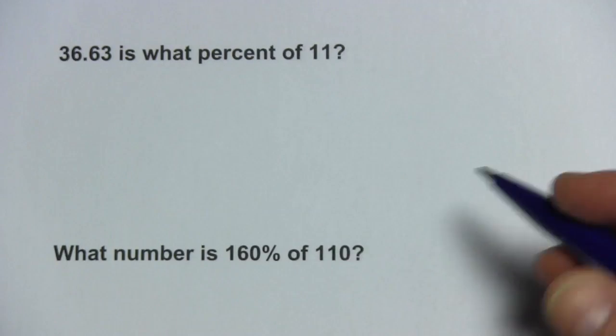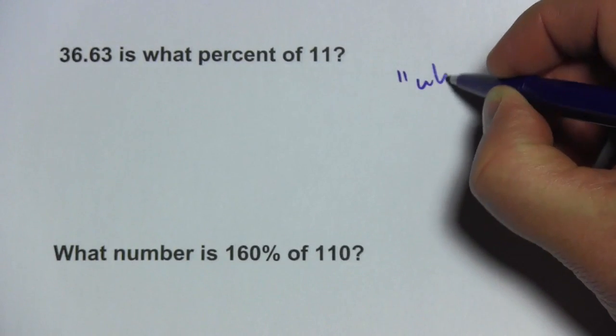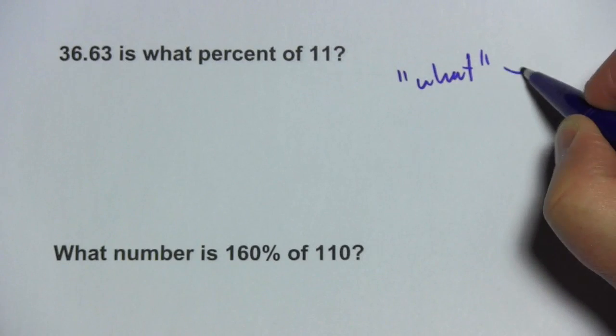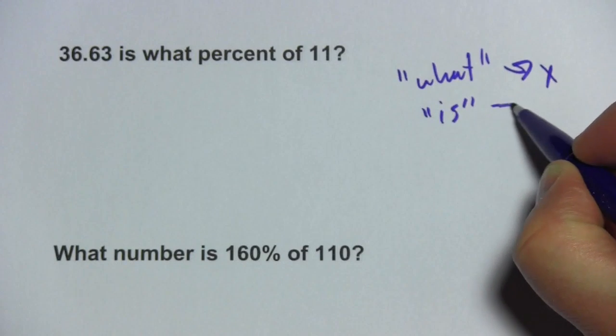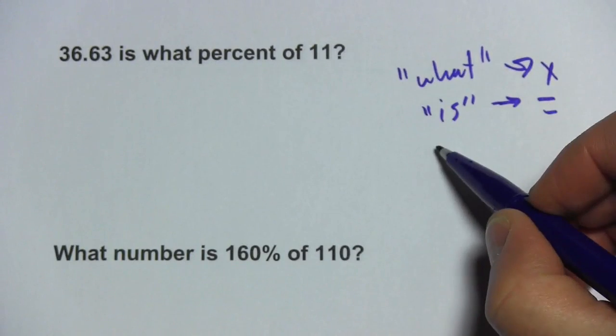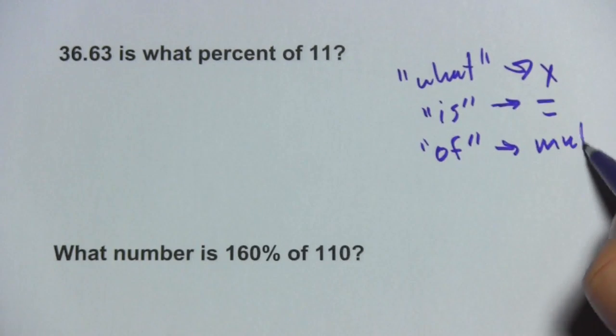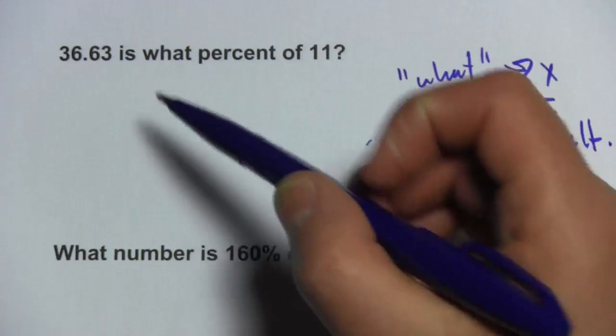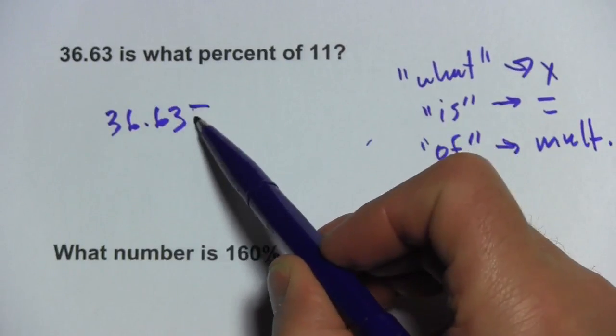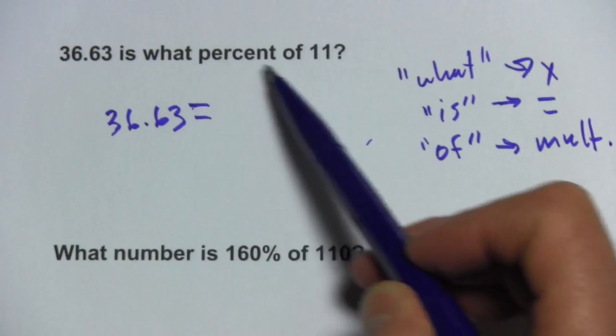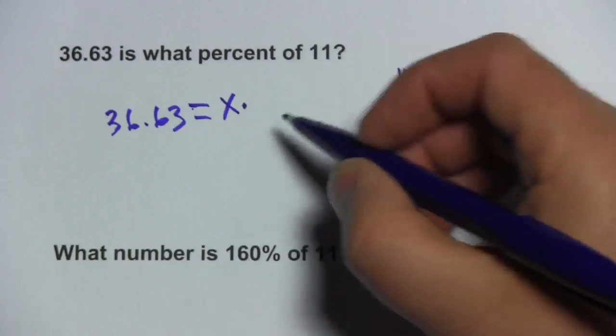I think the best way is translate it into a formula and we're going to use these keywords. So what is going to be our variable x, is going to be the equal sign, and of means to multiply. So let's see how we can go about translating this one. 36.63 is, that's our equal sign, what percent, that's our x, of, that's multiply, 11.